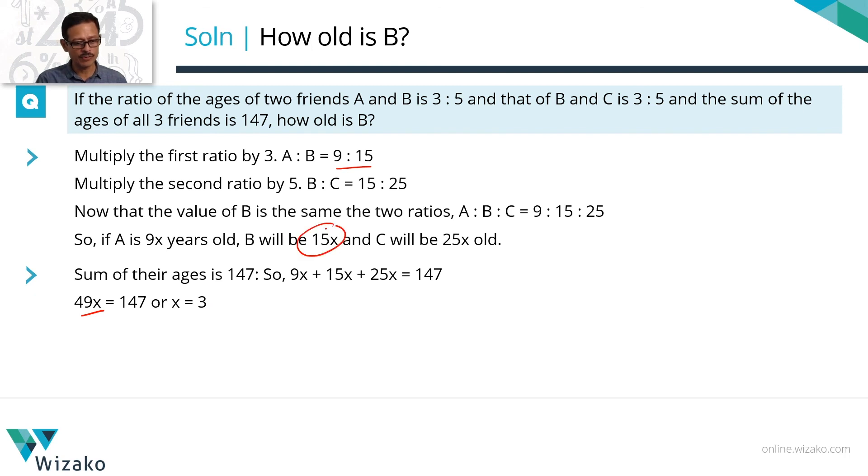Age of B is equal to 15x. So 15 times 3. 45 is B's age. Choice D is the correct answer to the question.